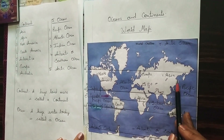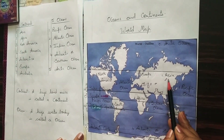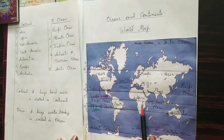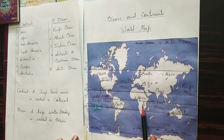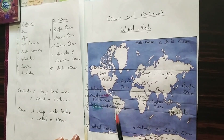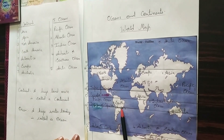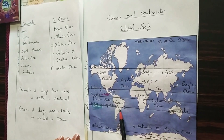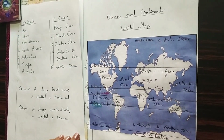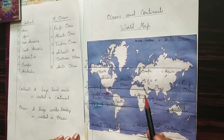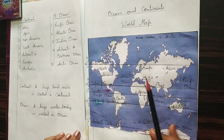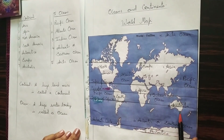Asia is the largest continent, the first. Africa is the second largest. North America is the third largest. South America is the fourth largest. Antarctica is the fifth largest. Europe is the sixth largest. And Australia is the last and smallest continent.